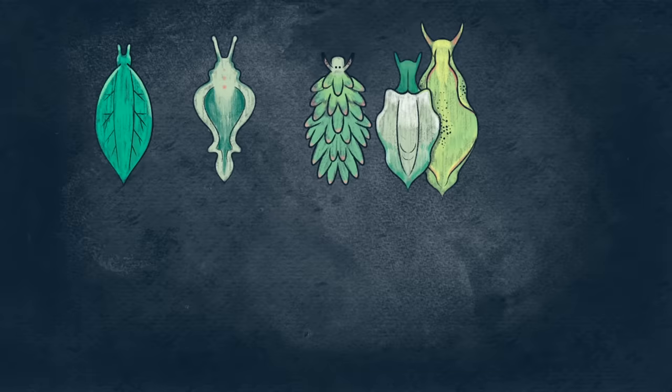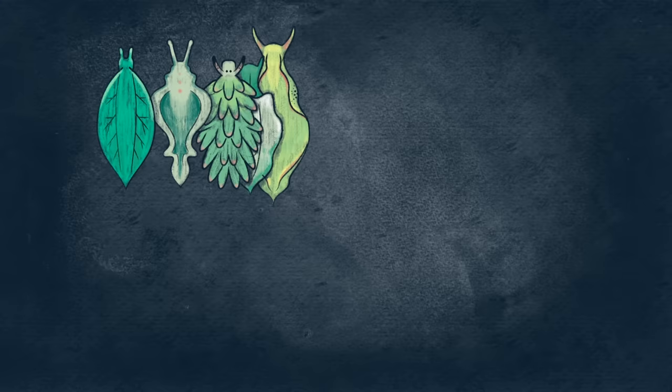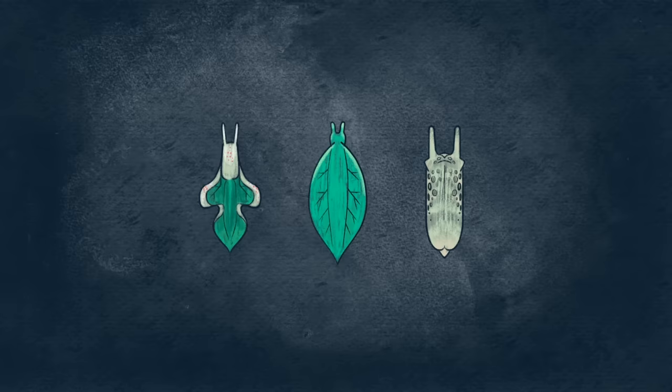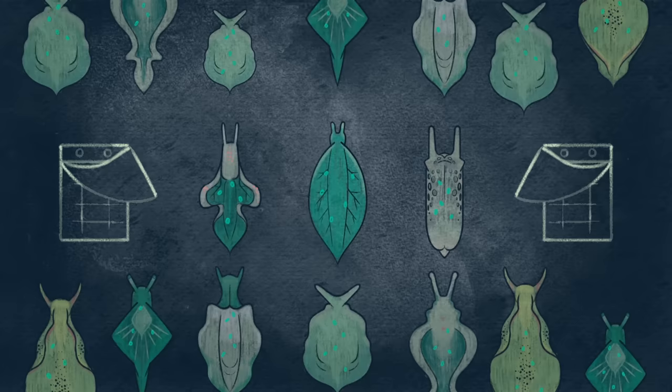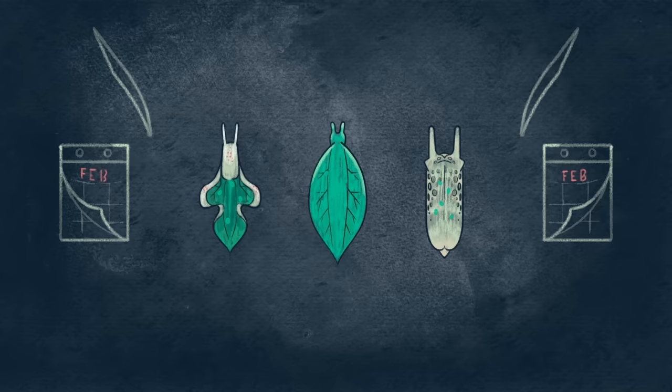As incredible as this adaptation is, there are more than 70 species of slug that steal chloroplasts from their food. What makes Elysia and a few closely related species in the Mediterranean and Pacific unique is how long they can hold onto chloroplasts. Most other slugs keep them for a few weeks at most.